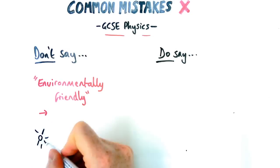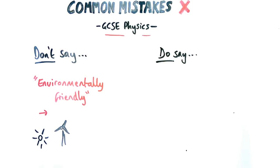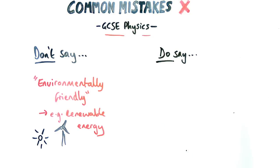First one is by saying vague terms like environmentally friendly when talking about the topic of, for example, renewable energy or fossil fuels. So people would say wind turbines and solar power is environmentally friendly. However, it is not on mark schemes.